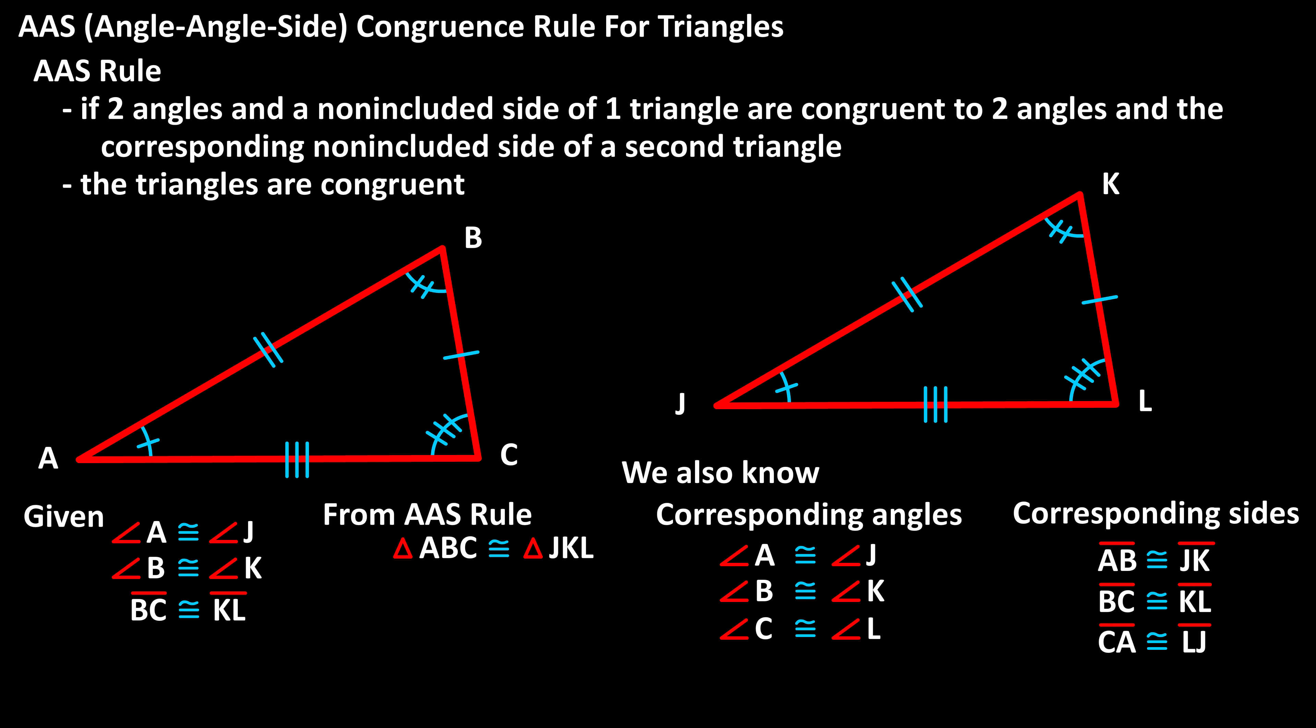And since these triangles are congruent, we also know that the measure of the corresponding angles will be equal, and the measure of the corresponding sides will also be equal.